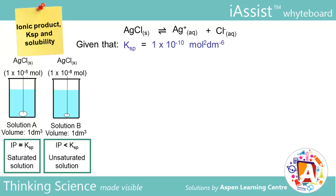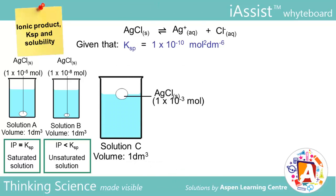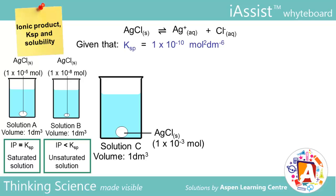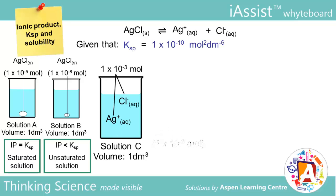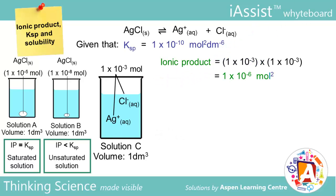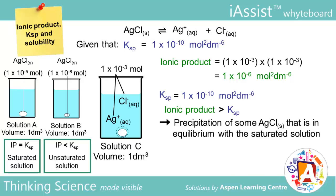Moving on to solution C. This time, we put in 100 times more AgCl — 1×10⁻³ moles. The ionic product would be 1×10⁻⁶. Ksp remains the same as the previous cases. We can see that now the ionic product exceeds Ksp, leading to precipitation of some AgCl. The precipitated AgCl, which is in solid state, will be in equilibrium with the saturated solution and no more salt can be dissolved. Solubility is still the same as solutions A and B: 1×10⁻⁵ mol dm⁻³.